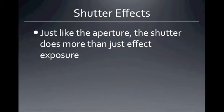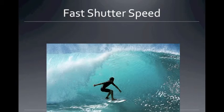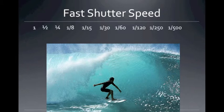Just like with the aperture, the shutter does more than just affect the amount of exposure. If you have a fast shutter speed, you can stop action. On the far right, we have 1/500th of a second — that's a very small period of time. That image is stopped. You can see each individual drip of water. It's a stopped action shot taken with a fast shutter speed.